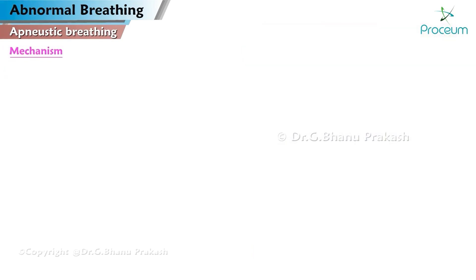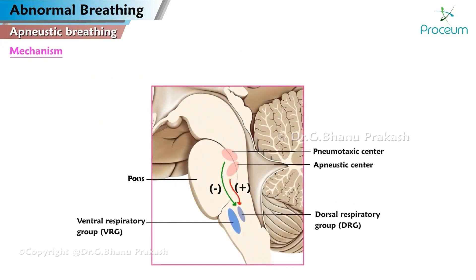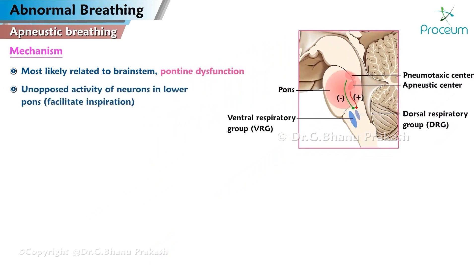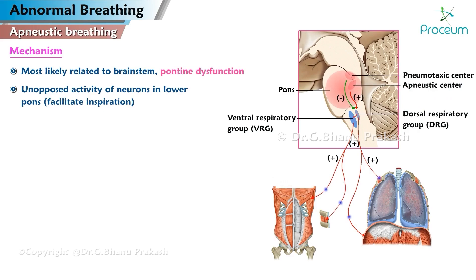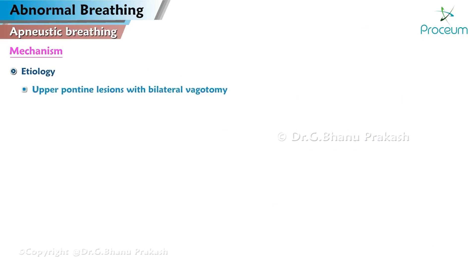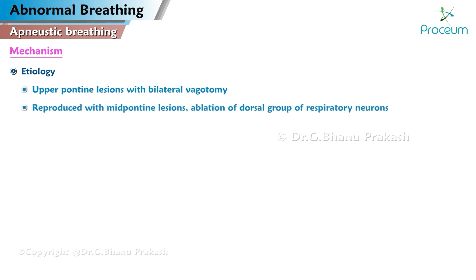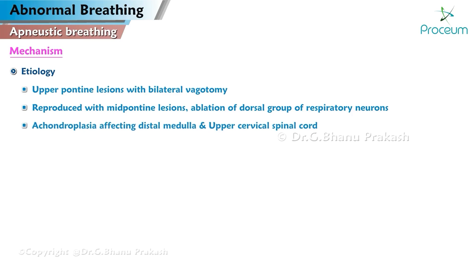Mechanism of apneistic breathing: The mechanism of apneuses is most likely related to brainstem and in particular pontine dysfunction. It was believed to be caused by unopposed activity of neurons in the lower pons which facilitate inspiration, seen in patients with upper pontine lesions with bilateral vagotomy. More recent reports show that apneuses can be reproduced with mid-pontine lesions, ablation of the dorsal group of respiratory neurons, and conditions affecting the distal medulla and upper cervical spinal cord. Apneistic breathing can also be temporarily induced by ketamine.